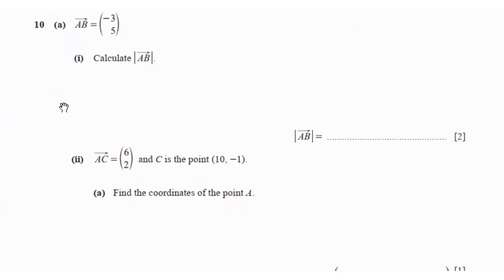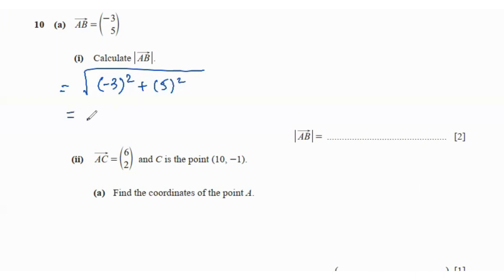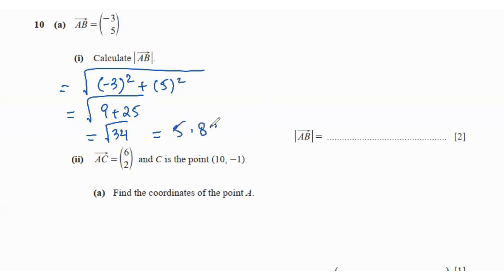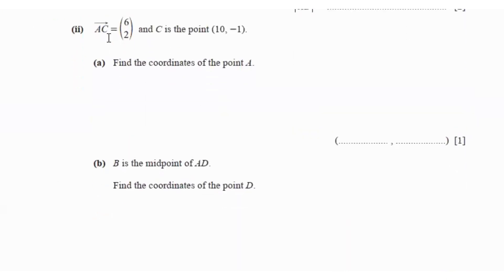Question 10 says vector AB is (-3, 5). Calculate the distance of AB. So we're going to do the square root of (-3)² plus 5², which is √(9 + 25) = √34, and √34 is 5.83.